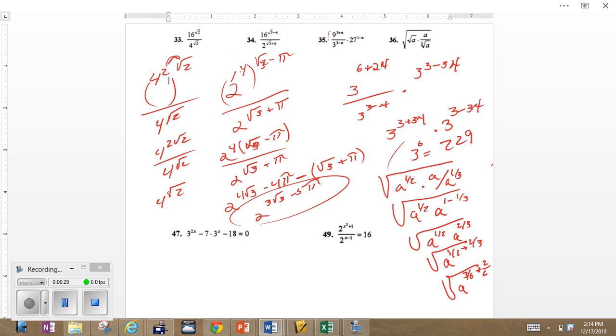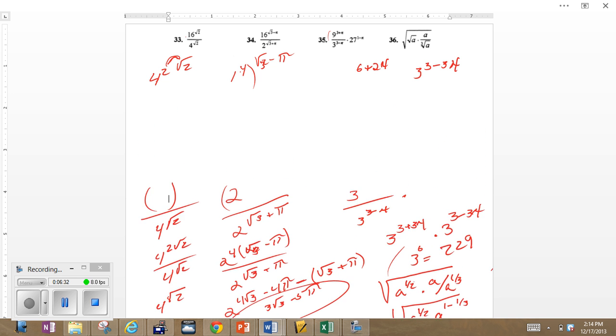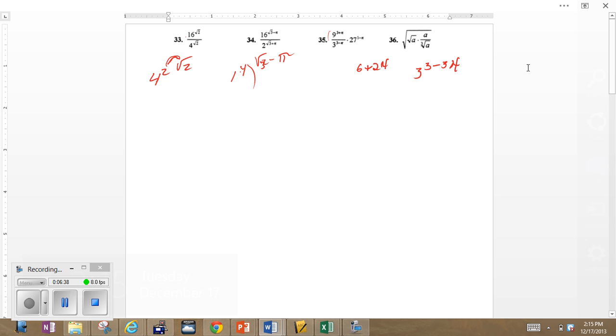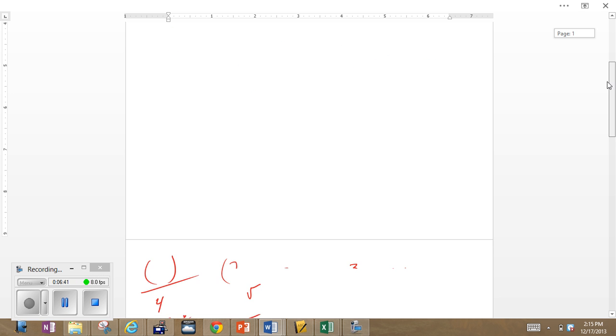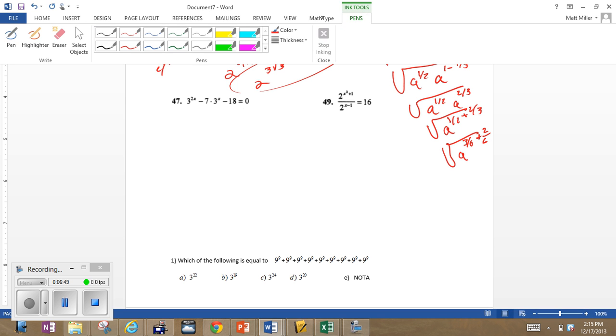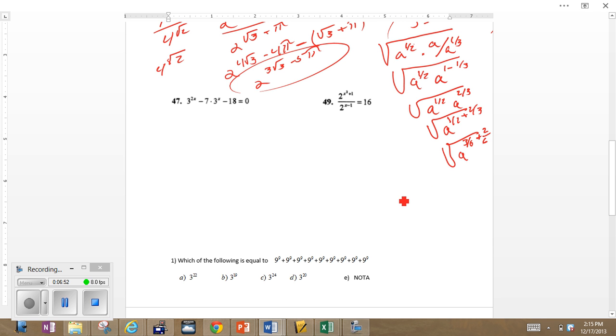So this goes to 3 sixths power plus the 2 sixths power. Ultimately what we have here now is, I'm going to turn this square root into a half power, so I'm going to get a to the 5 sixths power to the 1 half power, which would be a to the 5 twelfths power. So that would be your answer for that one.